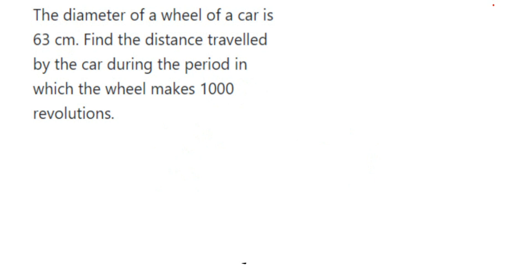We have diameter here, so we can directly find out the circumference. What is given? We have given diameter is equal to 63 cm. Now, we have direct formula of finding out the circumference. Circumference is denoted by capital C. Capital C is equal to - you have two formulas: one is 2πr or you can use πd.